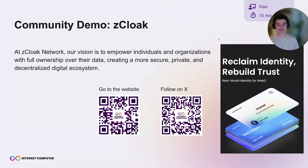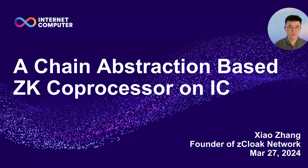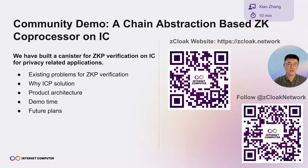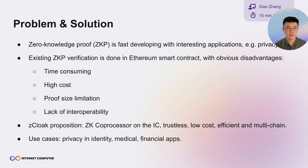Thank you. I'm the founder of zCloak Network. The project we're building is called a chain-abstraction-based ZK coprocessor on the IC. In short, we have built a canister for zero-knowledge proof (ZKP) verification on ICP for privacy-related applications. I'll introduce the problems we faced with ZKP verification, why we chose the IC, the product architecture, a quick demo, and future developments.